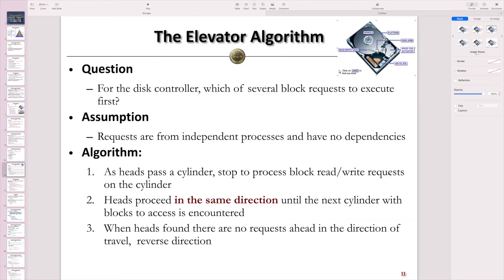In this page, we show a very interesting question for the disk controller. When the system is running, if we have multiple block requests at the same time from different processes, then which one should be executed first, and what will be the execution order of these different block requests from different processes?